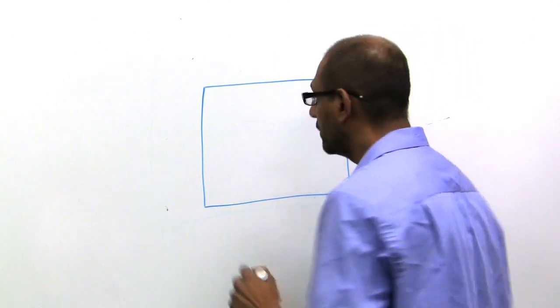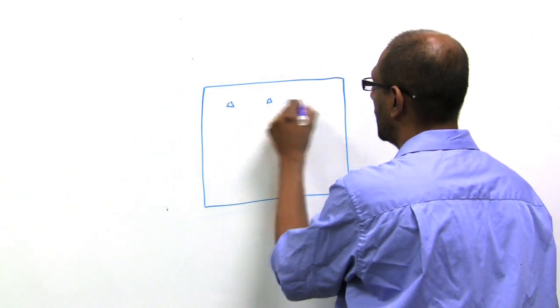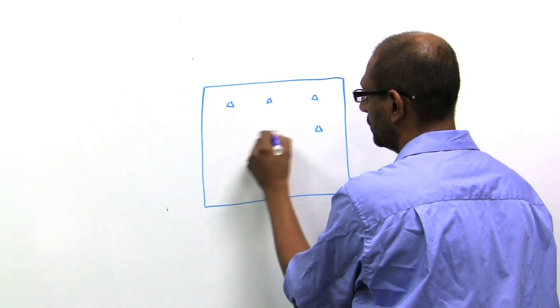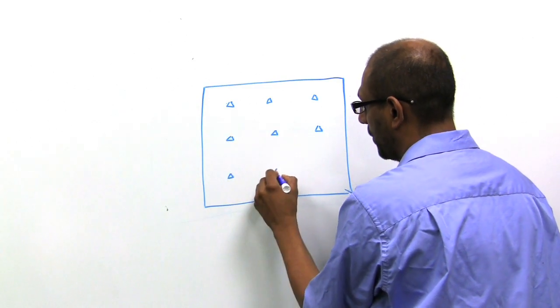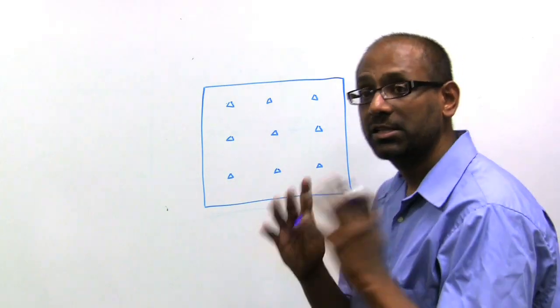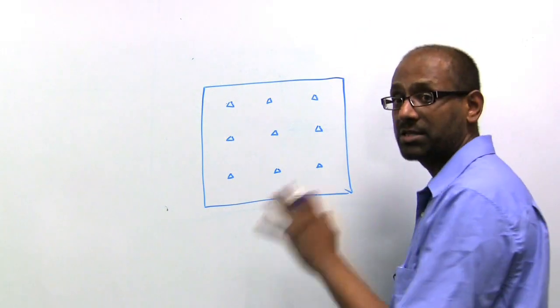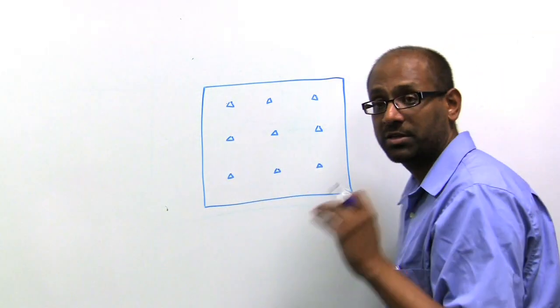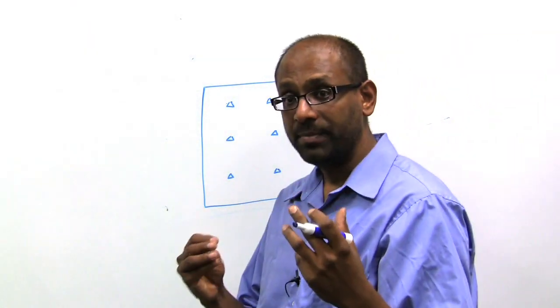So you have some coverage region. You have multiple access points. And I'm going to describe it in the context of a single channel architecture. So by design, all of these access points are on the same channel. They advertise the same BSSID.